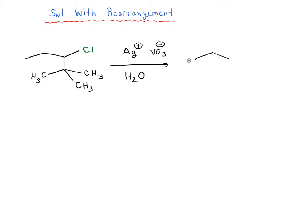Here is the product of this reaction — this is what it should look like. You should have CH3, CH3, CH3, and an OH. It doesn't matter whether your OH is in one position or another; as long as you have two CH3s and one OH coming off that carbon, you've drawn the right thing.